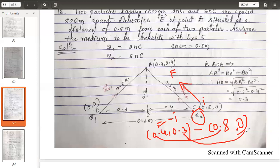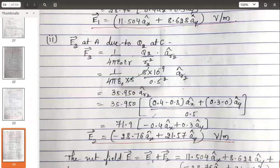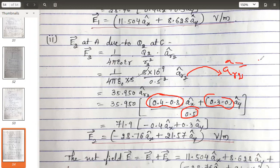So subtract: 0.4 minus 0.8 in x direction, 0.3 minus 0 in y direction. I have substituted it: 0.4 minus 0.8 in x, 0.3 minus 0 in y direction, divided by the magnitude. Why am I taking this? ar2 cap is the position vector r2 divided by its magnitude. Magnitude is already given to you: 0.5, the distance.